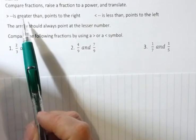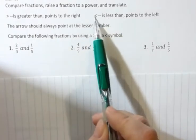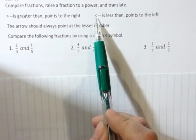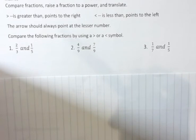Greater than is the symbol that points to the right, and less than is the symbol that points to the left. The arrow should always point at the lesser number or the number with the lesser value.